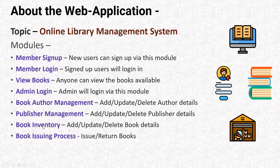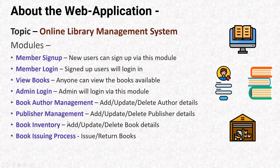We have publisher management to track details about publishers, and book inventory covering all the details about a book itself: name, genre, description, number of pages, cost, publication date, author, and so on. All those details are stored in a separate table, and the admin can add, update, and delete them. Lastly, we have the book issuing module — when a member visits and the librarian issues a book, that entry is maintained in a separate table.